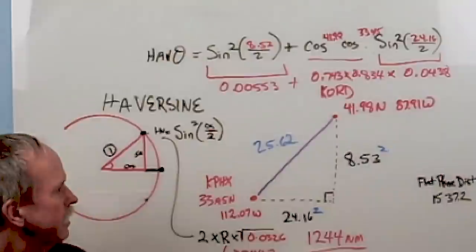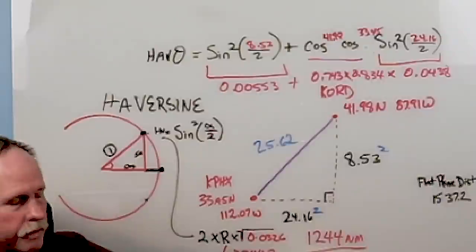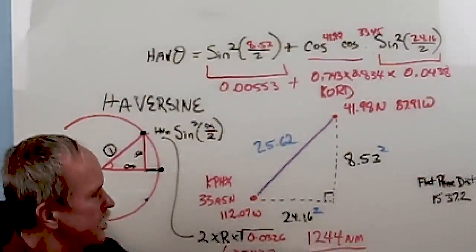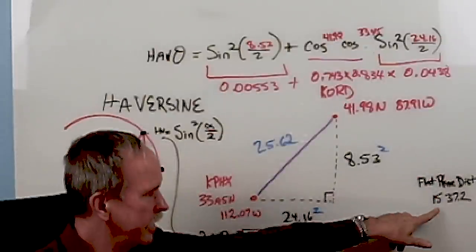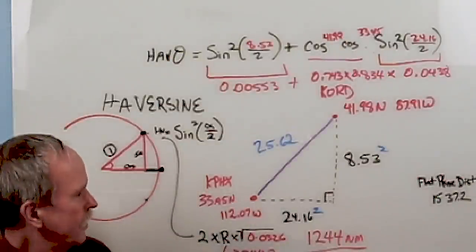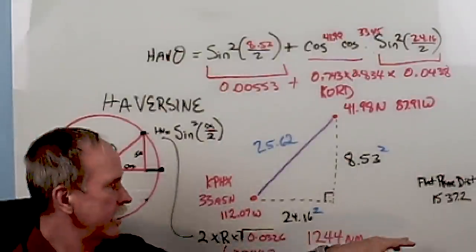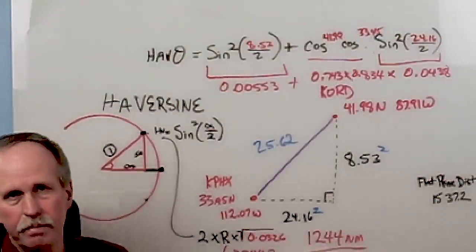The correct answer, which is 1251, is much closer to this number than it is to that one. And as a result, that confirms that our model, which is a spherical Earth, is much closer to reality than any flat plane.